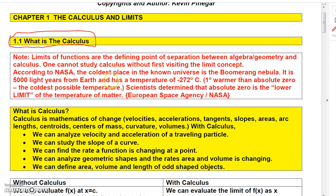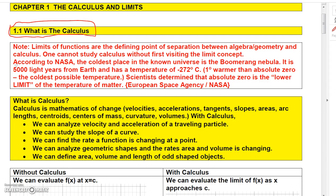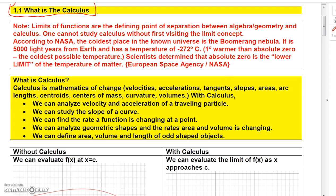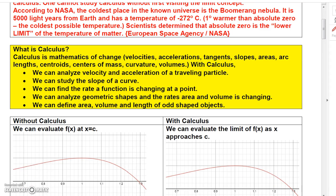I thought I'd throw in this example from a textbook: according to NASA, the coldest place in the known universe is the Boomerang Nebula. It's 5,000 light-years from Earth and has a temperature of negative 270 degrees Celsius — that's one degree warmer than absolute zero. Scientists have determined that absolute zero is the lower limit of the temperature of matter, and that's just an example of a limit you might encounter in advanced calculus.